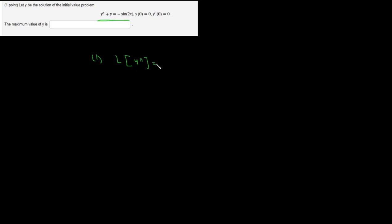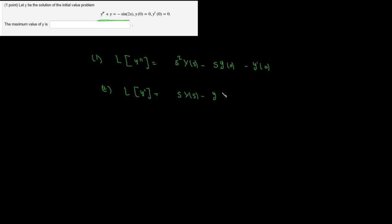Formula 1: The Laplace transform of y double prime is equal to s squared times Y(s) minus s times y(0) minus y prime(0). Formula 2: The Laplace transform of y prime is equal to s times Y(s) minus y(0). Formula 3: The Laplace transform of sin(ax) is equal to a over s squared plus a squared.